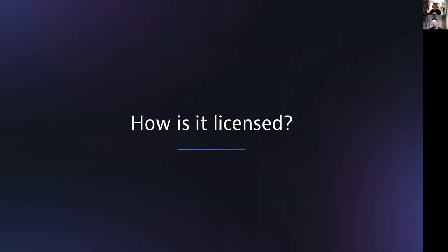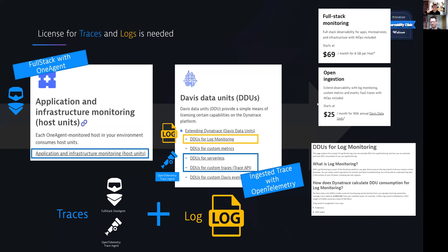Let's quickly talk about licensing. For getting traces, you can use OneAgent full stack licenses which automatically capture all your traces end-to-end, or monitor serverless functions and ingested traces via OpenTelemetry directed into Dynatrace. Additionally, if you want to leverage logs in this context, the log files are based on log monitoring licenses. When you have both, they will appear together and you can get all of this information from Dynatrace.